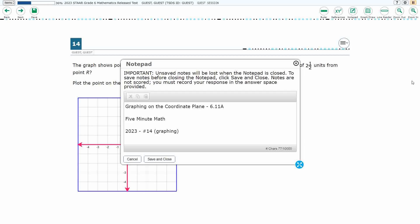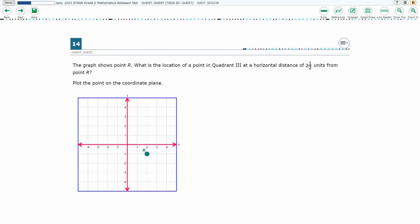Hello, and welcome to 5-Minute Math. Today we are looking at the 6th grade concept of graphing on the coordinate plane. This is standard 6.11a in the great state of Texas, and we are using item number 14, which is a new item type called graphing, of the 2023 released STAR test.